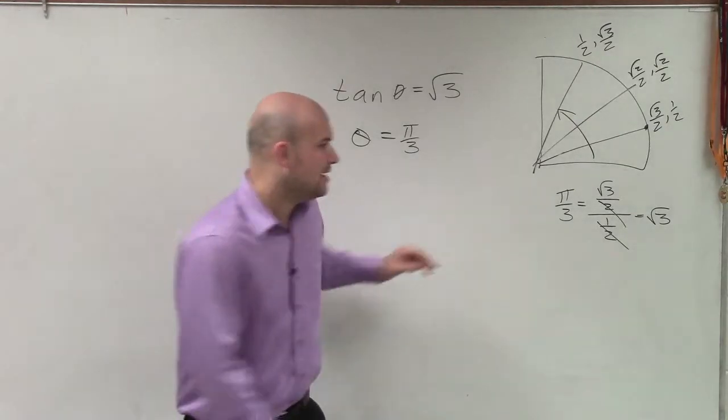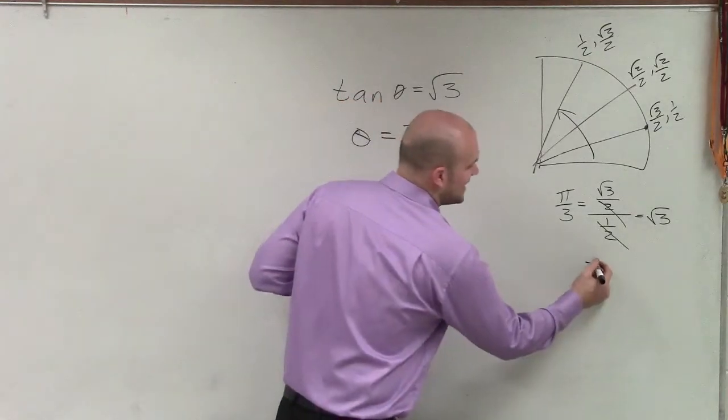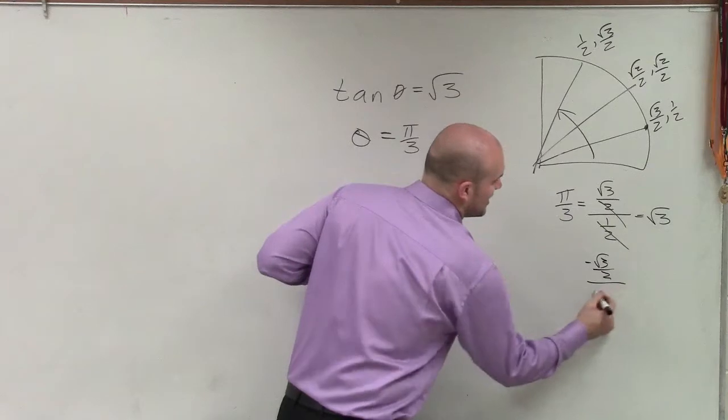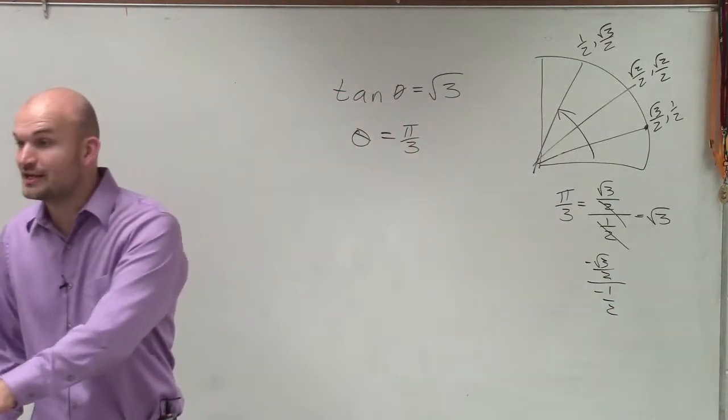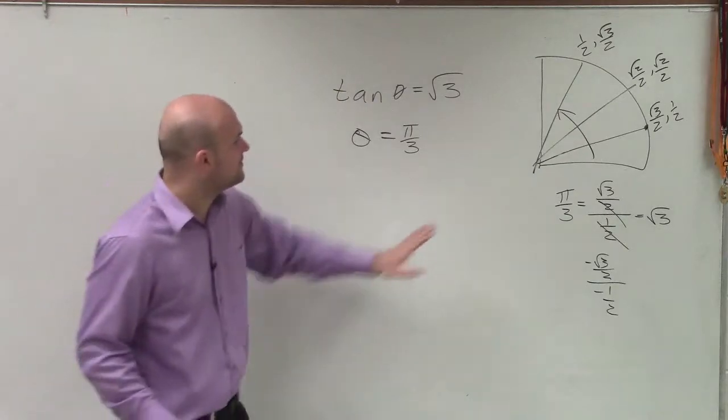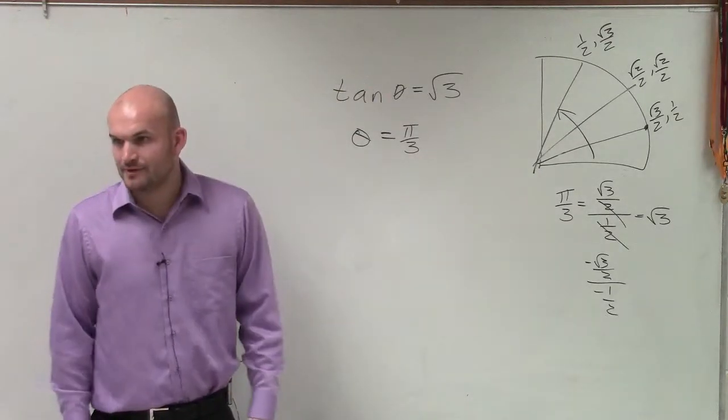Because remember, what about if I said negative square root of 3 over 2 divided by negative 1 half? Would that still equal? Oh, if it had constraints between 0 and 90? OK, never mind. So therefore, our only answer would be pi over 3, all right?